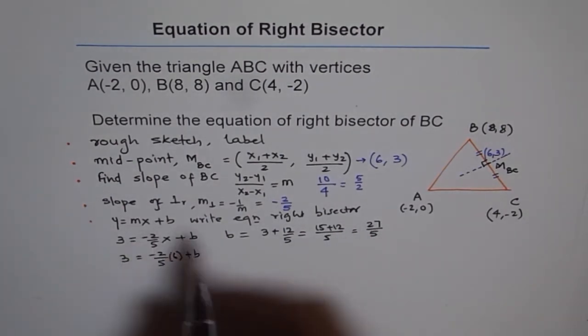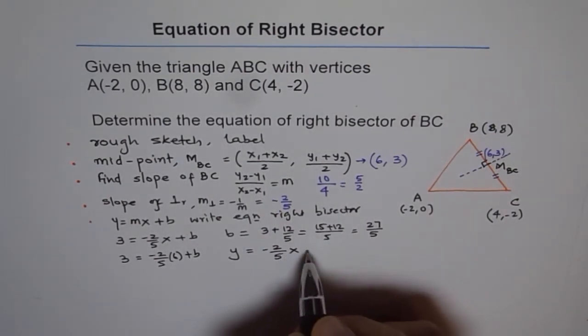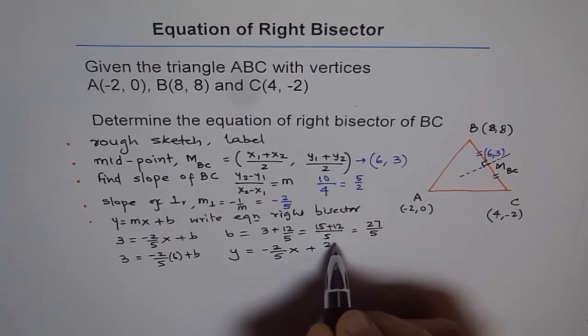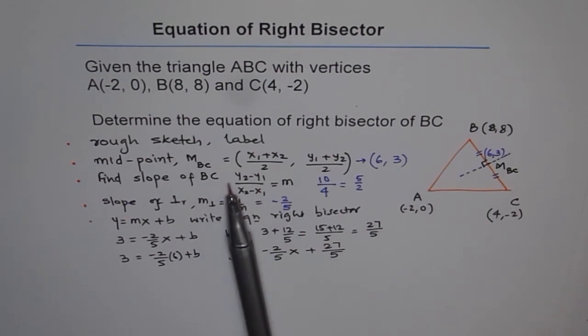And therefore, we get our equation as y equals to m is -2 over 5x plus 27 over 5. So that's the equation of our right bisector. I hope you understand all the steps. I've missed some steps out here on purpose. So you don't miss it. You plug the value of y2 minus y1, x2 minus x1, calculate. So you'd have to show all the steps and then write down your answer.